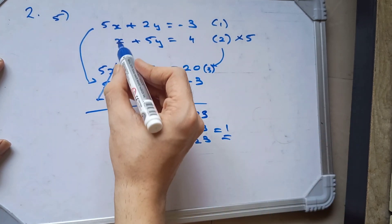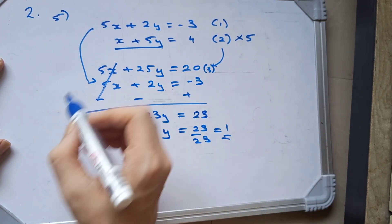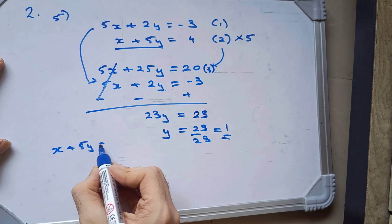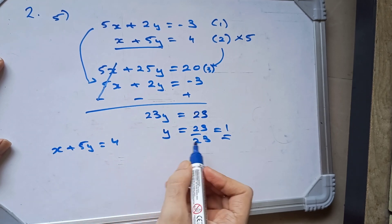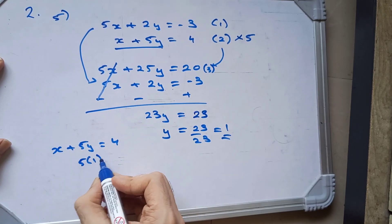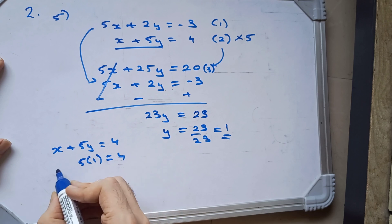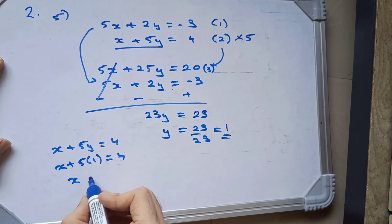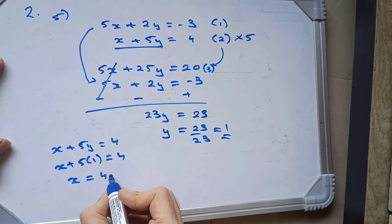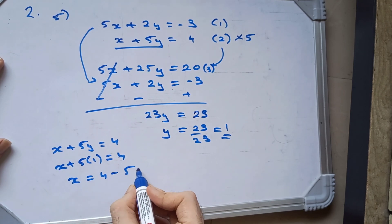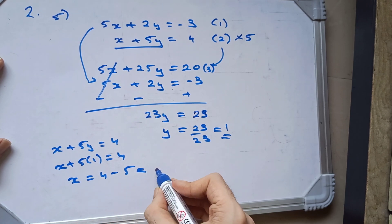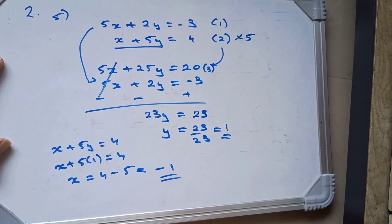We have to substitute this value. We will substitute in equation 2: x plus 5y which is equal to 4. The value of y is 1, and we will get x is equal to 5. So we get the answer as 4 minus 5, which is minus 1.